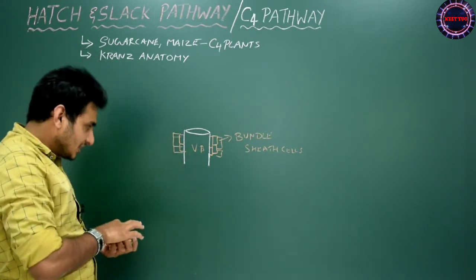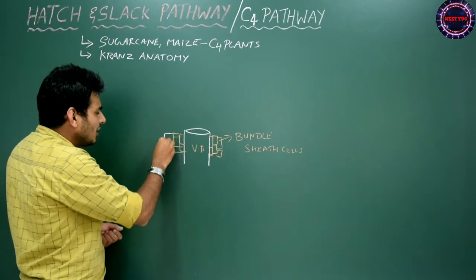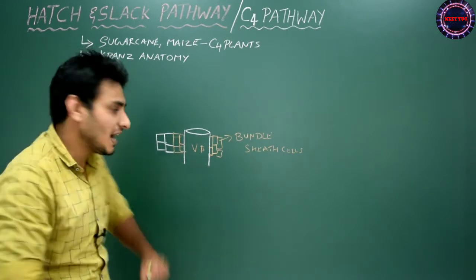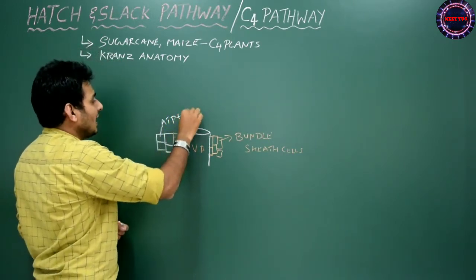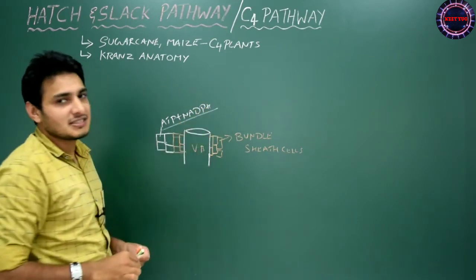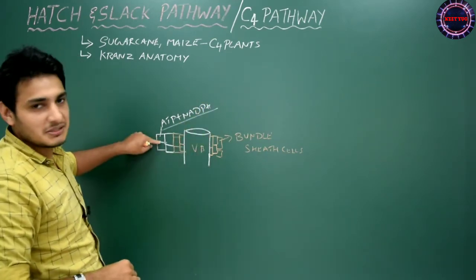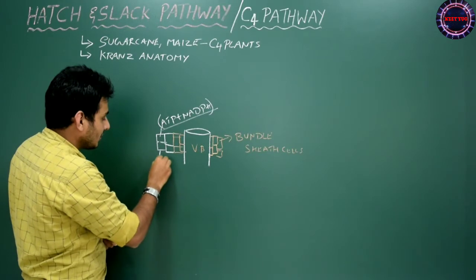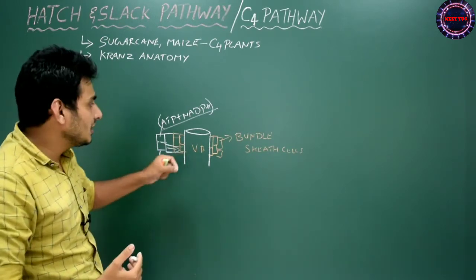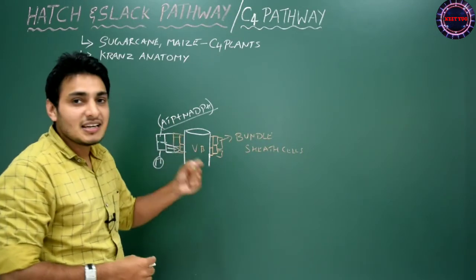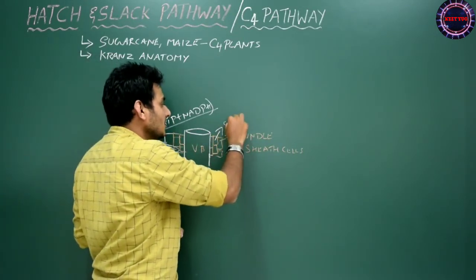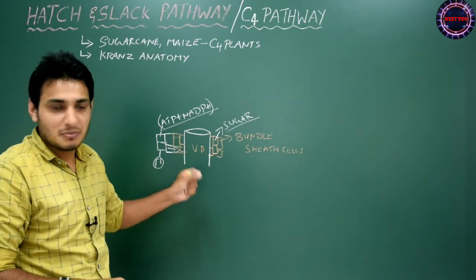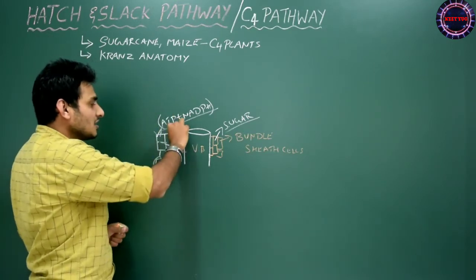These bundle sheath cells are in very close association with the mesophyll cells. In the mesophyll cells, the light reaction takes place and ATP and NADPH — the assimilatory power — are produced to synthesize hexose sugar. The bundle sheath cells utilize this ATP and NADPH, or their products, to synthesize sugar. In the case of C3 plants, everything takes place within the mesophyll cells, but here both mesophyll cells and bundle sheath cells are required for hexose sugar synthesis.